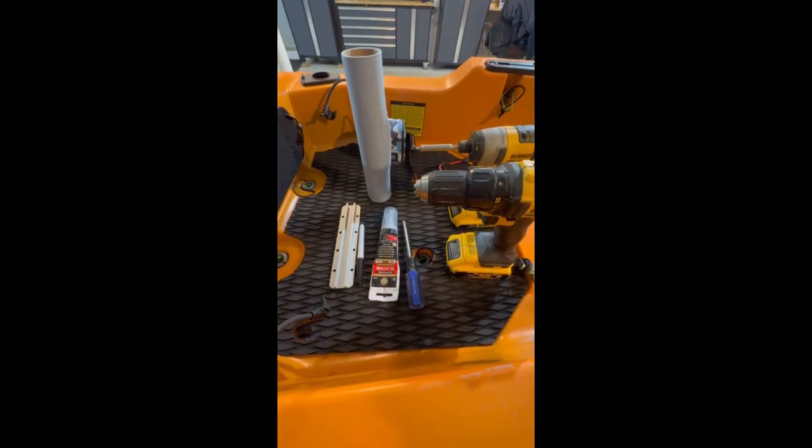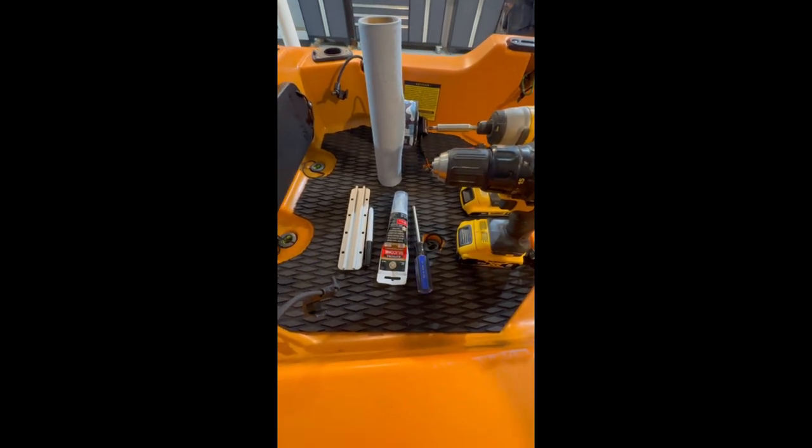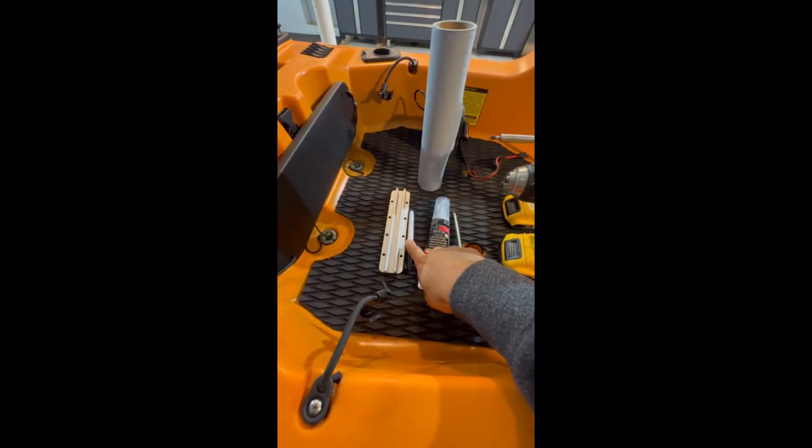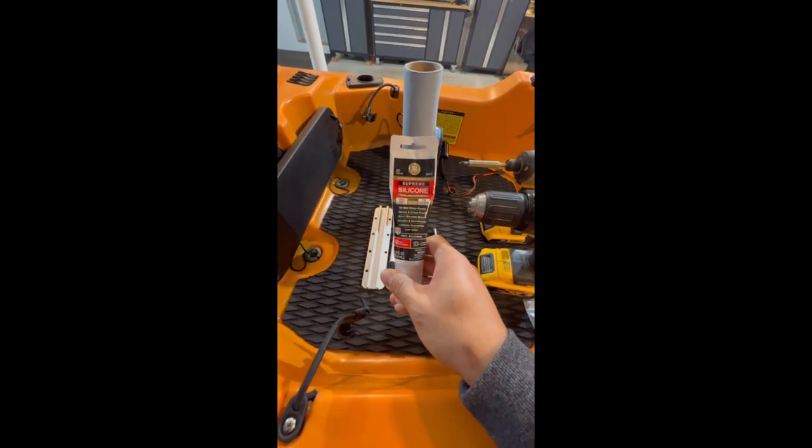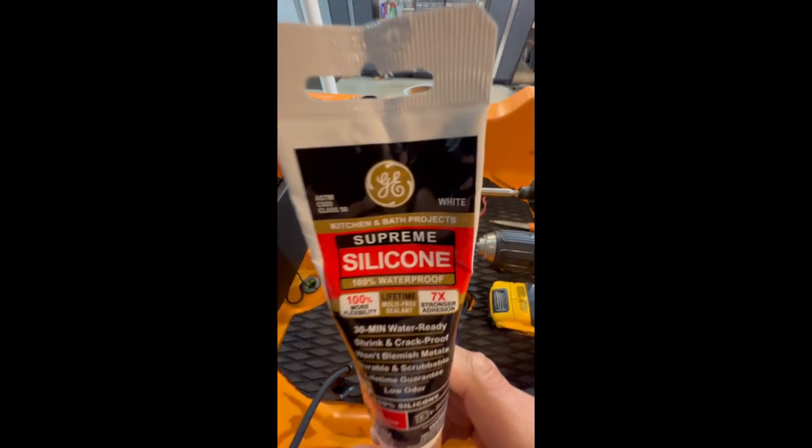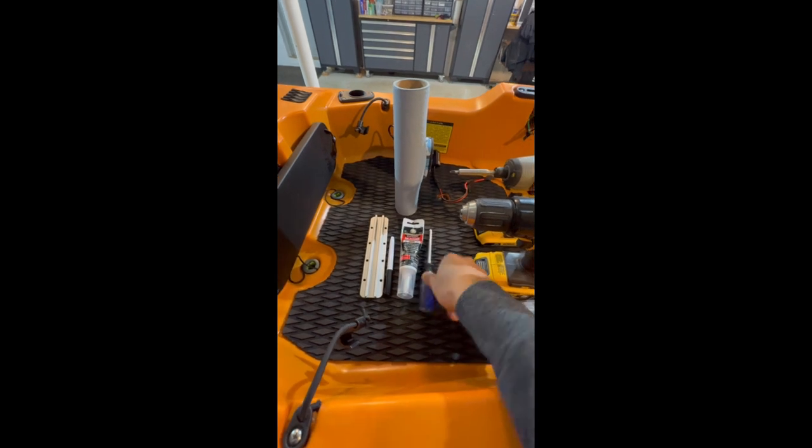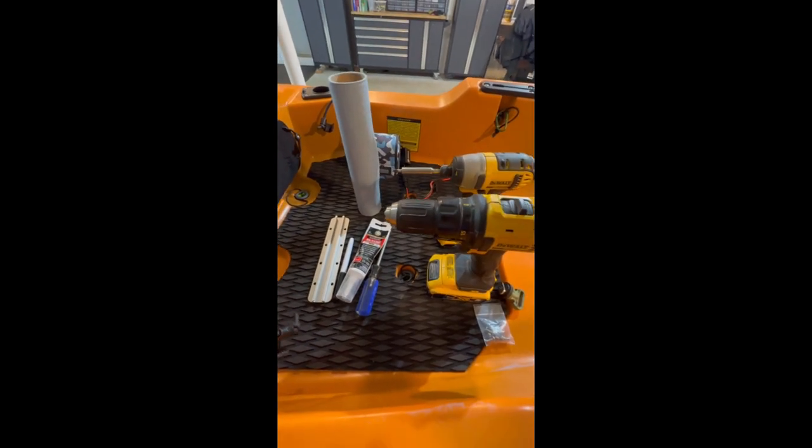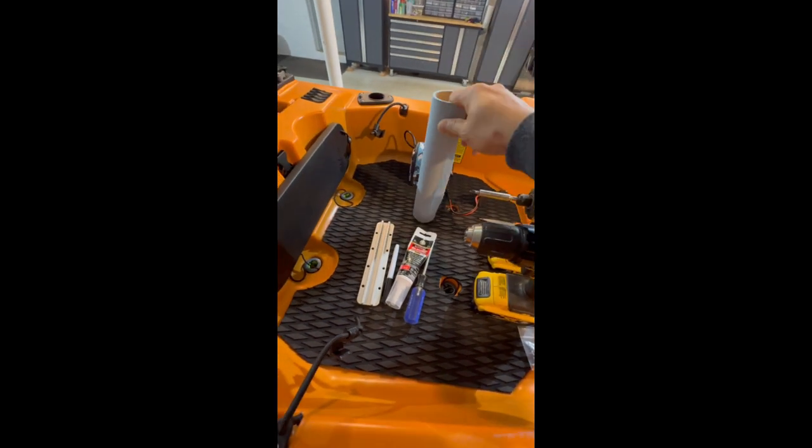It pretty much comes with everything that you need. It comes with the stainless steel screws. You're going to need a marker, some silicone, and don't be like me, I meant to buy a box of clear, and guess what? It's white. It'll be alright. A screwdriver, a Phillips screwdriver, a drill, and then an impact driver, and some shop towels or paper towels.